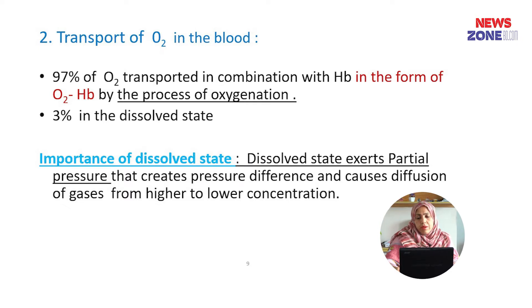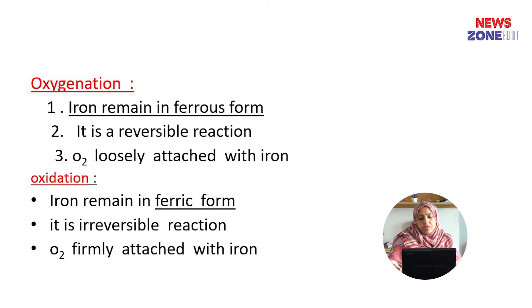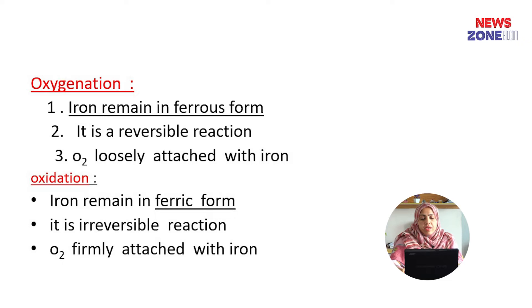Transport of oxygen in the blood: 97% of oxygen is transported in combination with hemoglobin in the form of oxyhemoglobin by the process of oxygenation, and 3% is in dissolved state. Dissolved state exerts the partial pressure. In oxygenation, iron remains in the ferrous form; it is reversible and oxygen binds with iron loosely. In oxidation, iron remains in the ferric form; it is irreversible and oxygen binds with iron firmly.